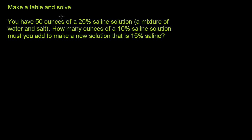We're told to make a table and solve. We have 50 ounces of a 25% saline solution, a mixture of water and salt. How many ounces of a 10% saline solution must you add to make a new solution that is 15% saline?